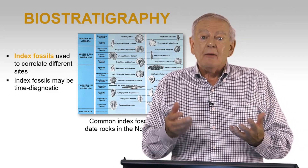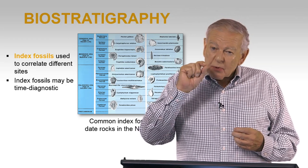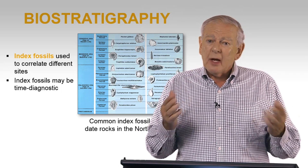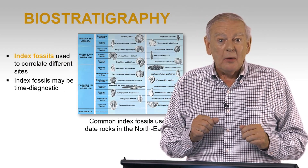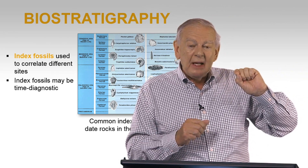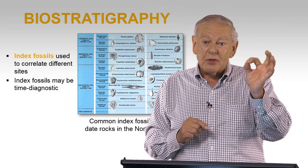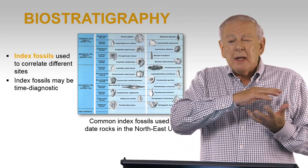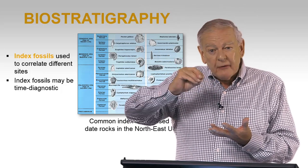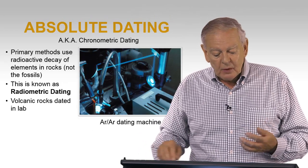Sometimes we cannot find volcanic layers to date. When that happens, we use biostratigraphy — meaning certain index fossils allow us to estimate how old the layer is in which a fossil is found. For example, if you find a dinosaur fossil, we know dinosaurs died out 65 million years ago, so that layer is older than 65 million years. These index fossils are time diagnostic. Some animals like elephants and pigs evolve very quickly and show different stages in their evolution, making them useful stratigraphic markers.